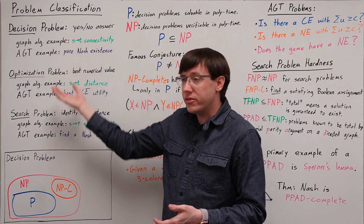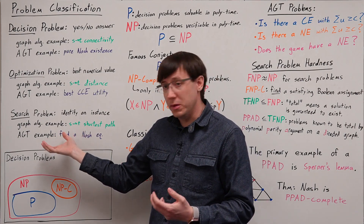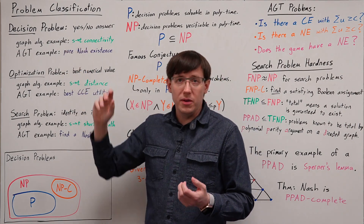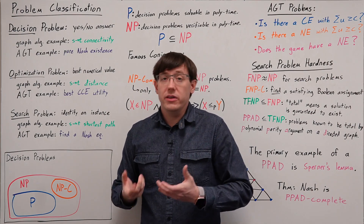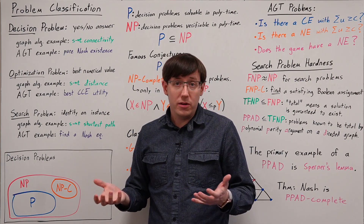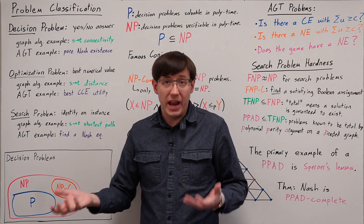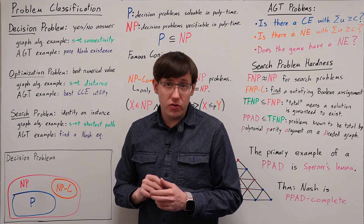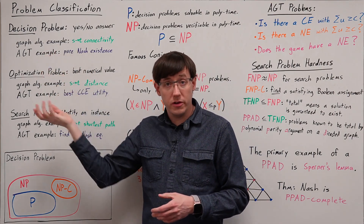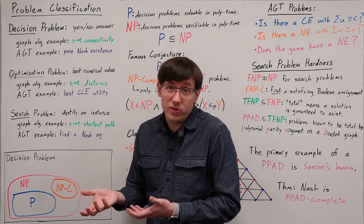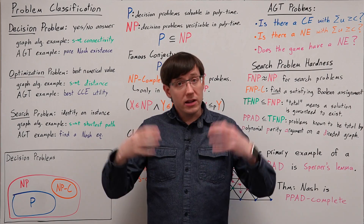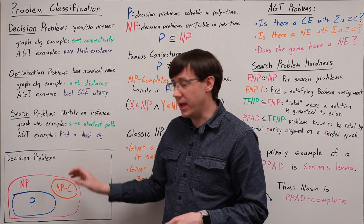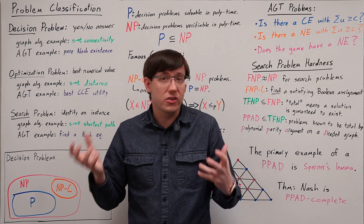Among these problem classifications there's a bit of a spectrum — from search problems, which tend to be the most natural way to phrase many problems, to decision problems, which tend to be the easiest to work with in a theoretical context. If the sort of output the problem expects is just a yes or no answer, it can be much easier to prove things about the problem or its algorithms. So in computational complexity it's common to reason about the decision version of a problem, even if what we'd actually like to write an algorithm for is the search version.